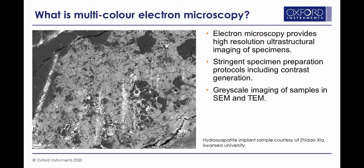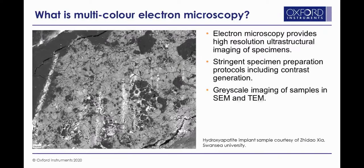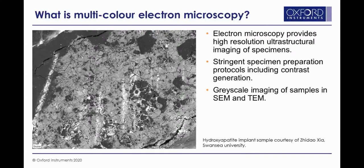The sample on screen is the planed face of a resin-embedded hydroxyapatite bone implant in the process of degradation, imaged using an SEM. It was hoped that heavy metal staining would provide enough contrast difference to see cellular material. But apart from one distinct cell in the centre, it is quite challenging to differentiate between the implant and the tissue because of the grayscale nature of SEM and TEM imaging.